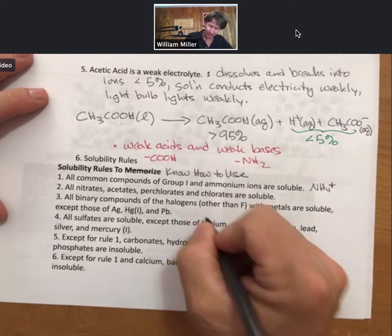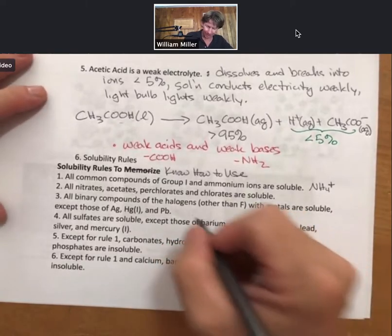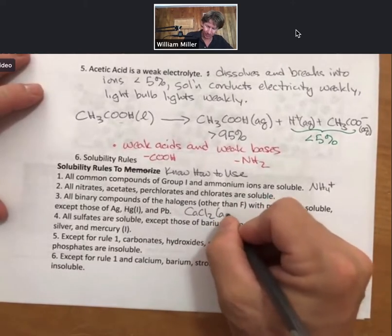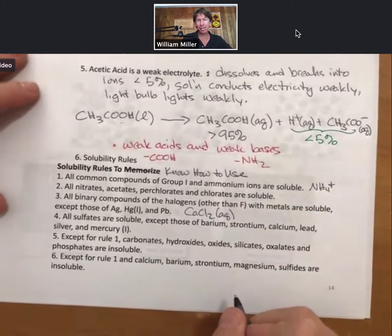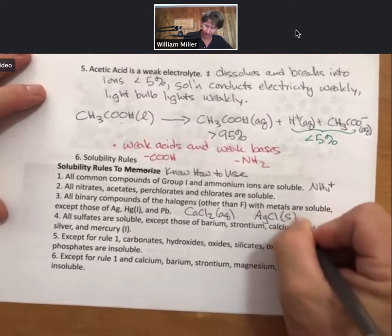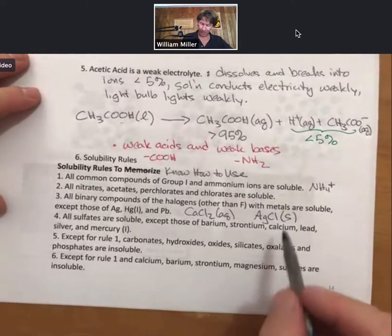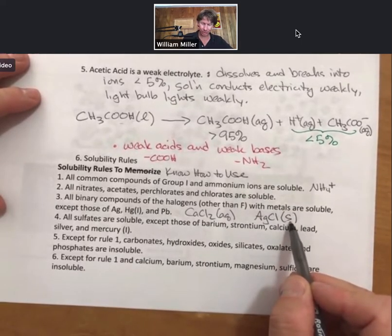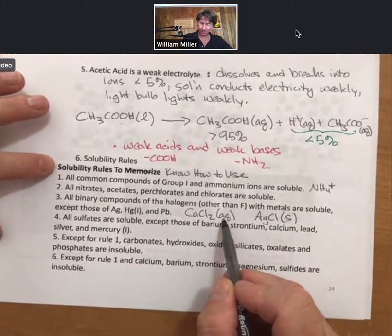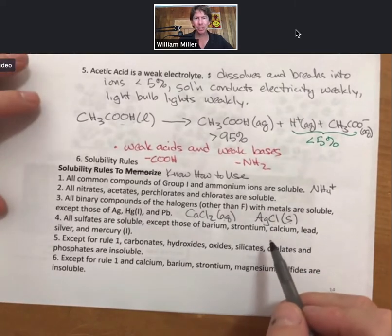All binary compounds of the halogens other than fluorine with metals are soluble except those of silver, mercury(I), and lead. So for example, according to this, calcium chloride would be soluble, which means it would be aqueous in water, but silver chloride would be insoluble and therefore a solid phase. So soluble materials are aqueous in water and insoluble materials are solids.